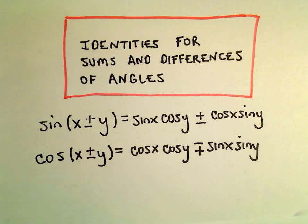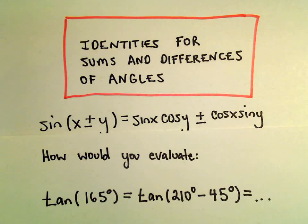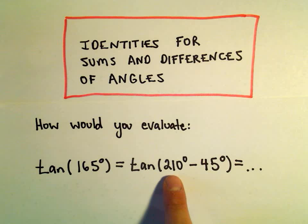So one more example here of using our identities for sums and differences of angles. Suppose we want to figure out tangent of 165 degrees, which we can write as tangent of 210 degrees minus 45 degrees.